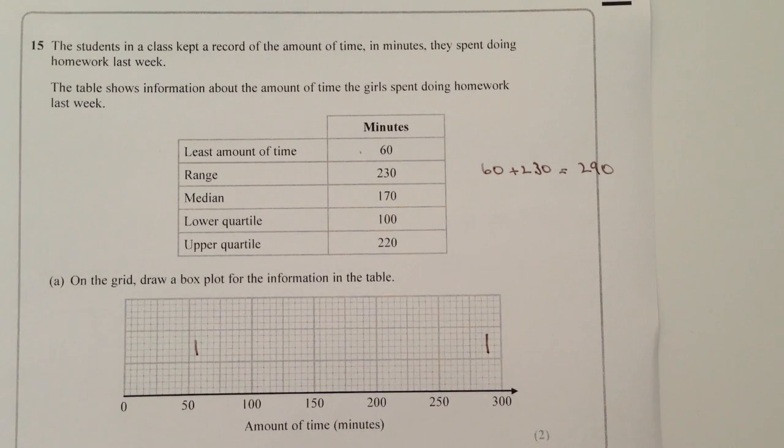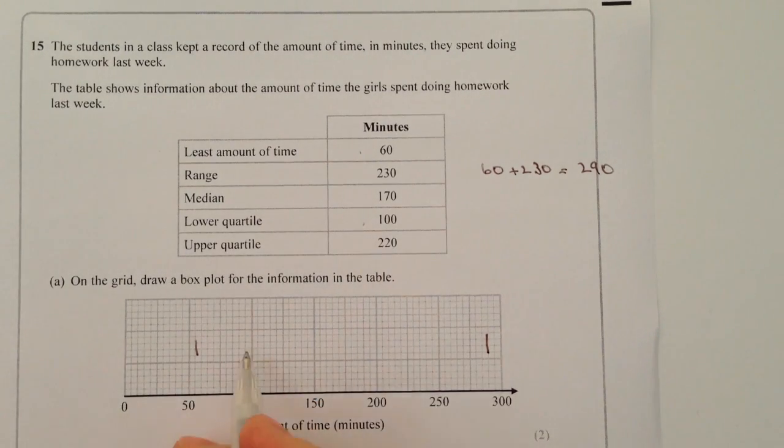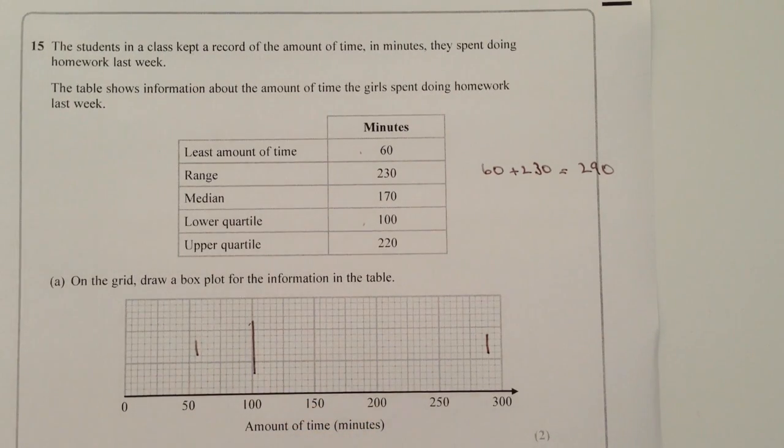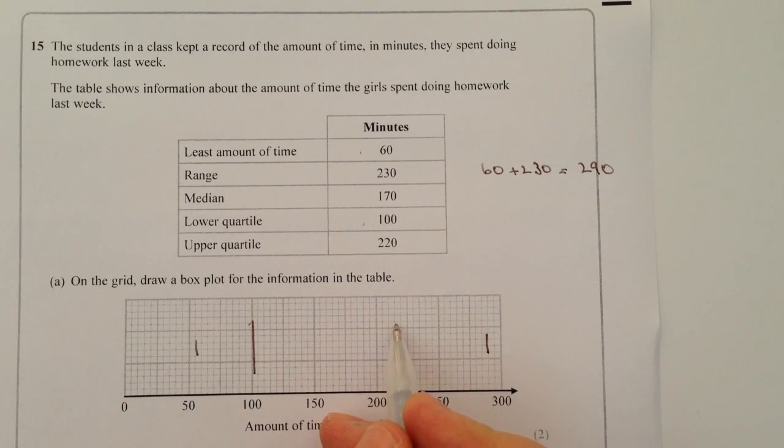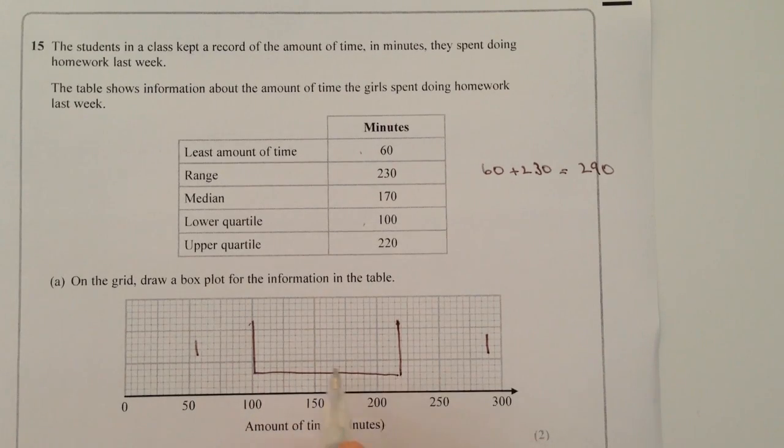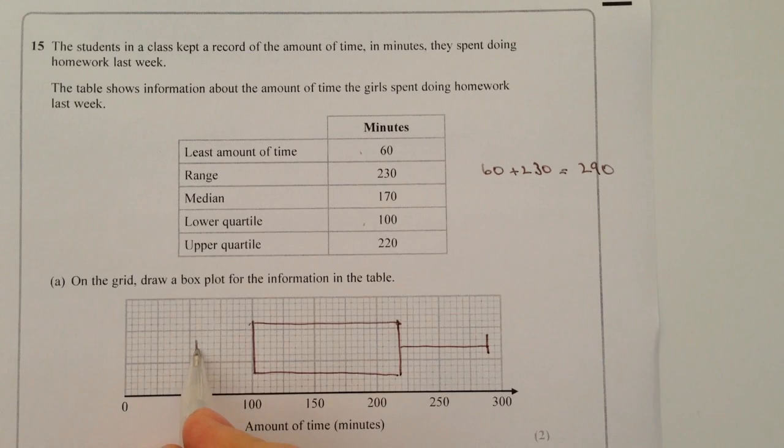The rest of the information we should be able to plot fairly easily. The lower quartile which we have here is 100, so that's going to be this area here. The upper quartile is going to be 220, so that's going to be roughly about here. And I'm going to join that up and create myself a nice box plot like that.